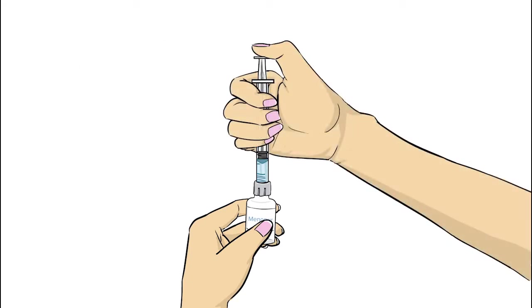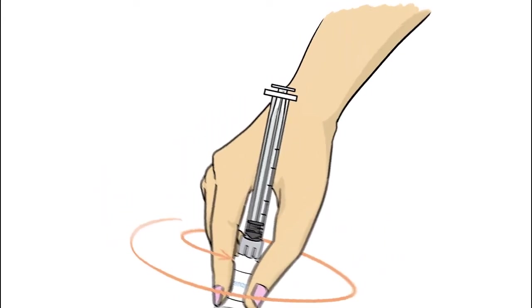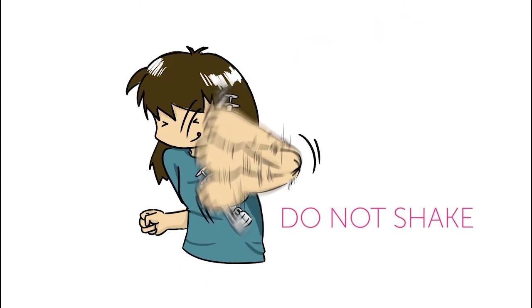Slowly push down on the syringe plunger to inject the sodium chloride into the Menopur powder vial. Keeping the syringe attached, gently swirl the vial until the Menopur powder is completely dissolved. Do not shake the vial or else bubbles will form.